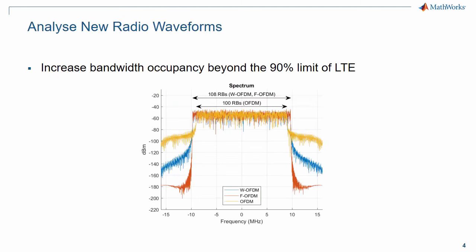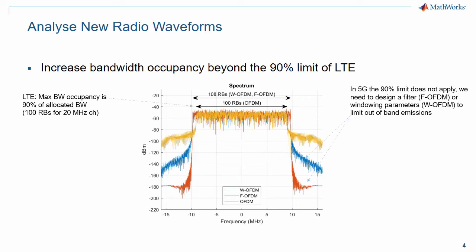MathWorks 5G library ships with a MATLAB example analyzing the performance of the new radio waveforms considered for 5G. In LTE the bandwidth occupancy is limited to 90% of the allocated band. This limitation does not apply in 5G. Bandwidth occupancy can be increased due to the reduced out-of-band emissions of F-OFDM and W-OFDM. In this figure we have increased it to 108 rather than 100 RBs. Here we show the spectrum of the resulting signals. As expected both W-OFDM and F-OFDM exhibit a more rapid drop-off in power outside of the useful band. There are a few more observations that can be made.